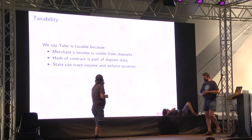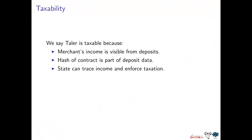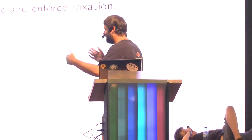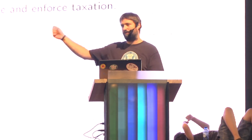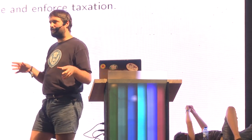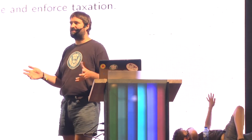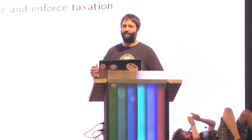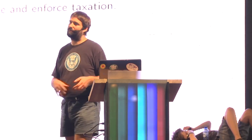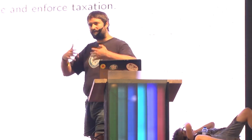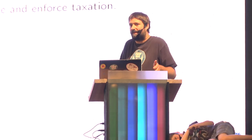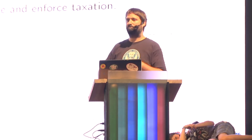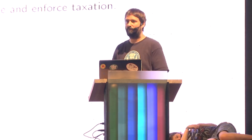We need to explain what taxability means in GNU Taler. The high-level idea: when you're a merchant and you receive income, that's going to be visible from you depositing coins at the exchange. The exchange can say you got this amount of money. The contract you agree to with the customer will have its hash embedded as part of the payment, so later the state can come to you and ask: what was the contract, what did you sell, is there VAT or income tax applicable? The exchange only sees the hash of the contract — the contract itself is none of the payment service provider's business. Because of this, the state can trace transactions whenever you receive money and apply the right level of taxation.